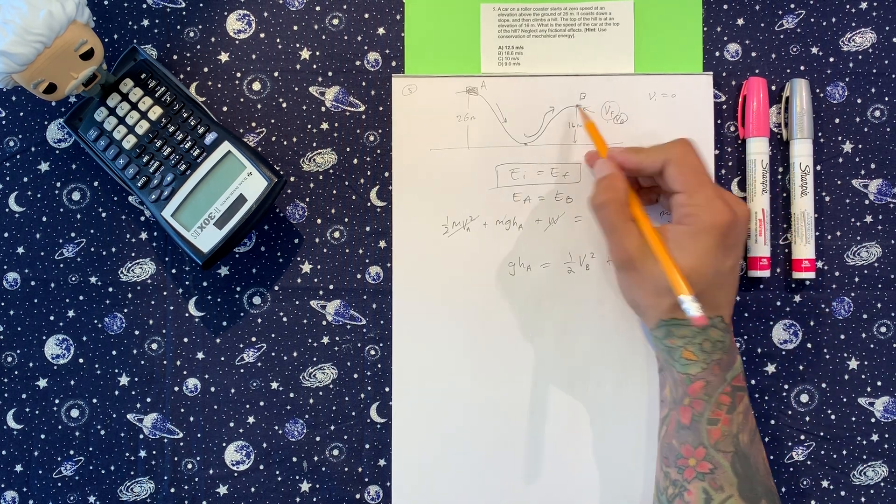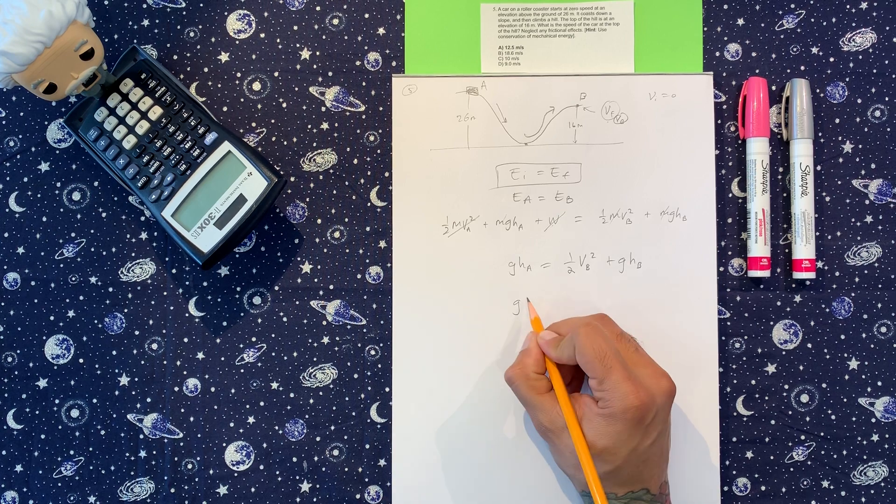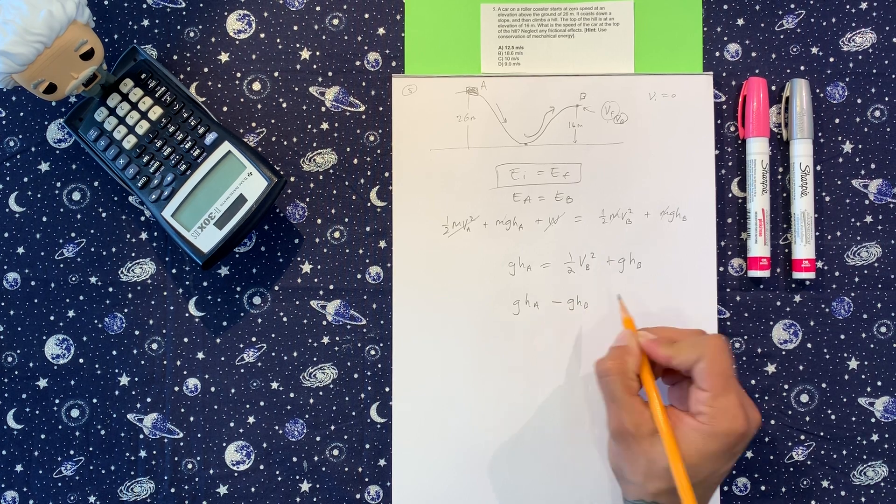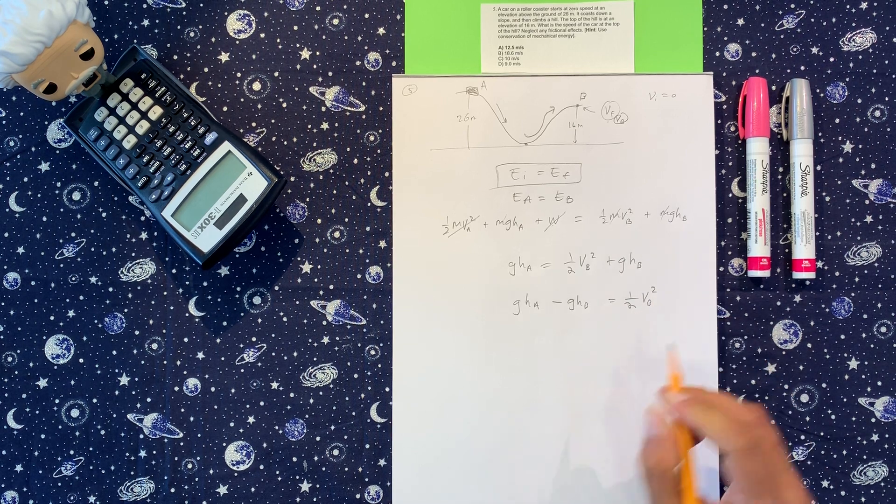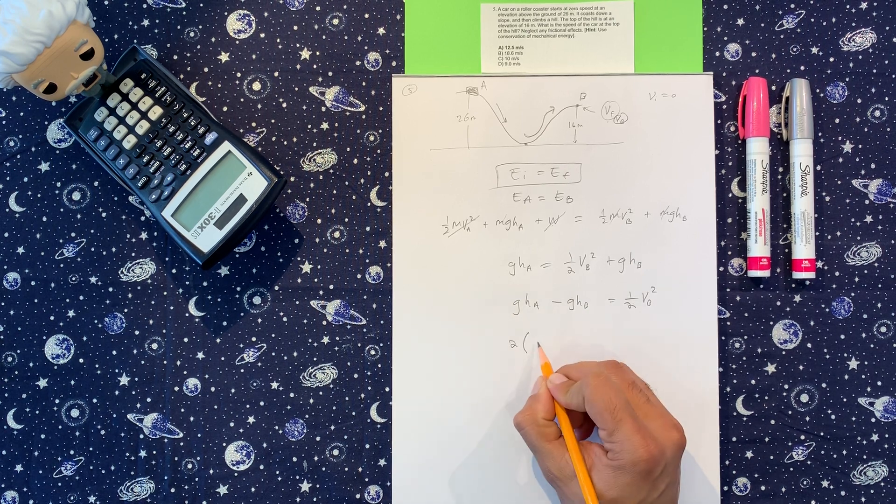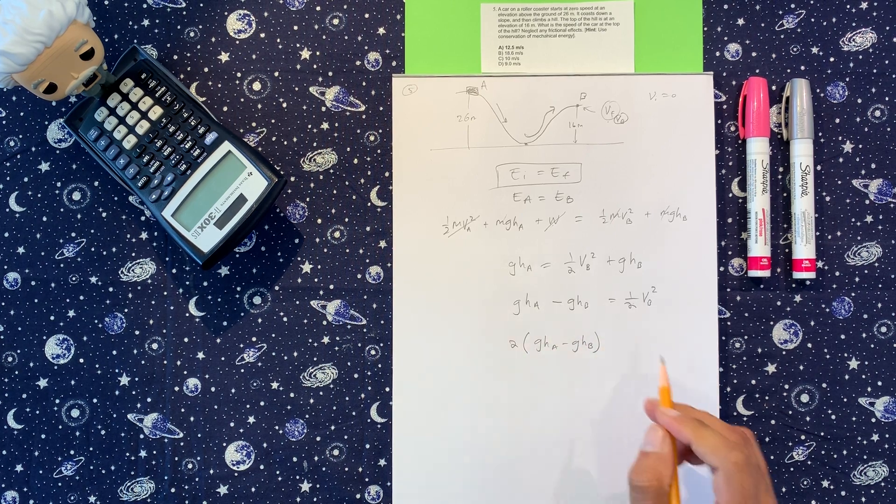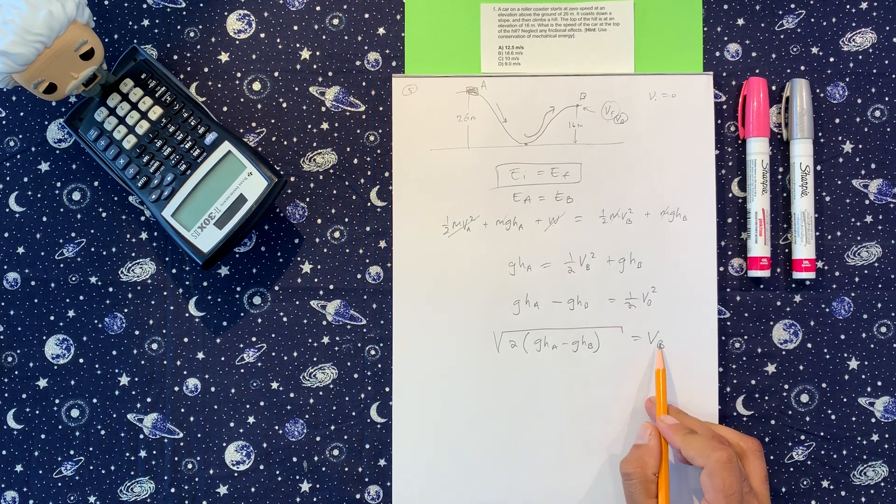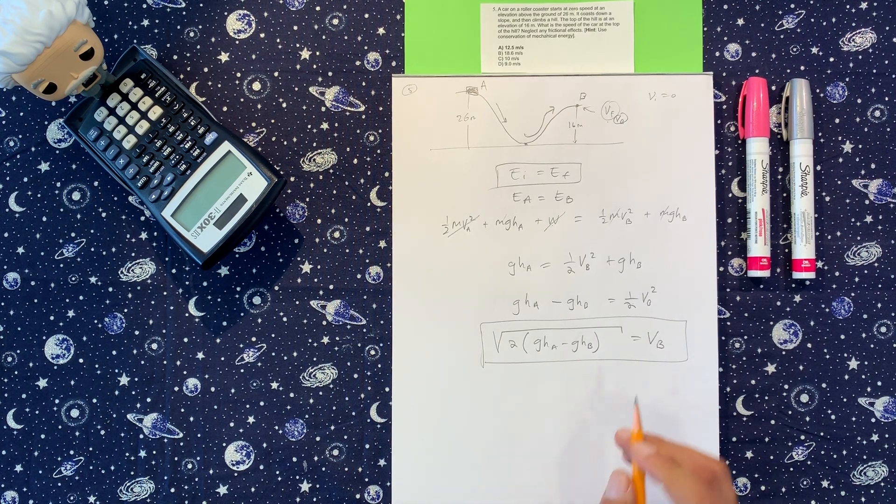It's asking us for the velocity at B, so this is what we need. I'm going to do some math. This side stays, I'm going to put this on the other side. It becomes minus, I still have the one half velocity at B squared. I'm going to put the two on this side, so two times everything I already had on this side, and then I'm going to square root everything so I can have velocity at B alone. That's it.